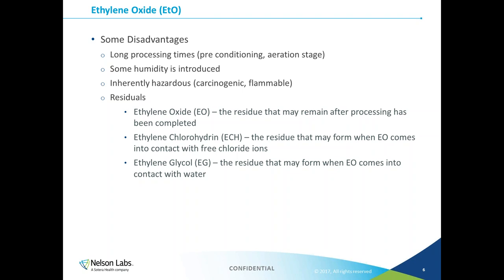A few other disadvantages to EO are possible residuals — byproducts of the processing left over after the off-gassing cycle is finished. The three main ethylene oxide residuals are: EO itself, which may remain after processing; ethylene chlorohydrin (ECH), formed when EO comes into contact with free chloride items; and ethylene glycol, formed when EO comes into contact with water. As an interesting aside, after EO is evacuated from the chamber, the excess EO is pumped into a large chamber containing water and high humidity, which turns the EO residual into ethylene glycol — which is then recycled and used in other industrial processes.